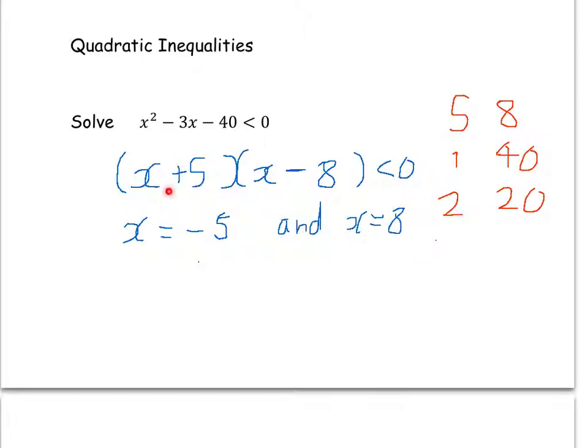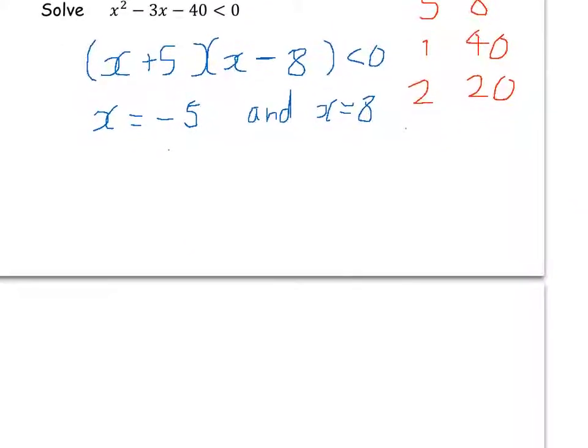Because we're looking for what value makes this bracket 0, which is minus 5, and what value makes that bracket 0, which is 8. We've not quite finished this question, because we're looking for where it's less than 0.